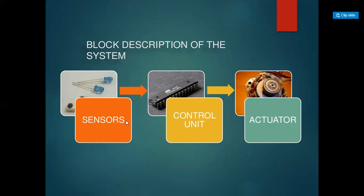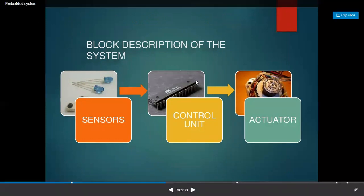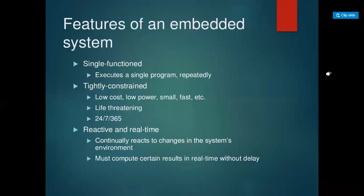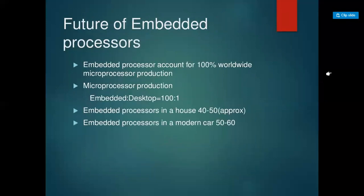The block description of an embedded system includes sensor, control unit, and actuator: the sensor is like the eye, the control unit processes input, and the actuator performs the final execution. Regarding the future of embedded processors: embedded processors account for 100% of worldwide microprocessor production. A typical house contains approximately 40 to 50 embedded microprocessors, and a modern car contains approximately 50 to 60 embedded microprocessors.